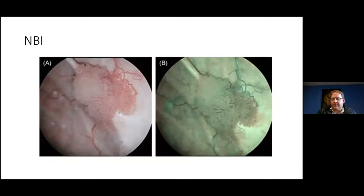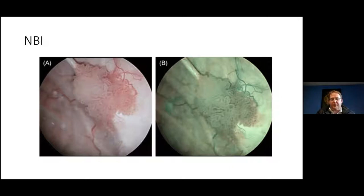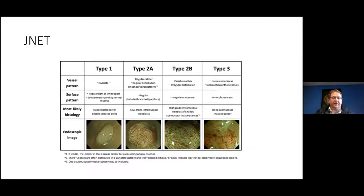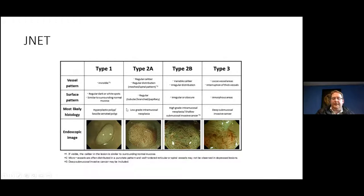Narrowband imaging — most scopes are fitted with this today, whether you're looking at something like SPICE or similar. Each scope has a different brand name for essentially the same thing. Narrowband imaging shows you the blood vessels around or deep to your polyp, giving you an idea of its malignant potential. The Japanese then took all of these ideas, put them together, and gave us the JNET classification — looking at the narrowband imaging vessel pattern and the pit pattern with chromoendoscopy to say: what's the most likely pathology of what you're staring at? They divided it into four groups.